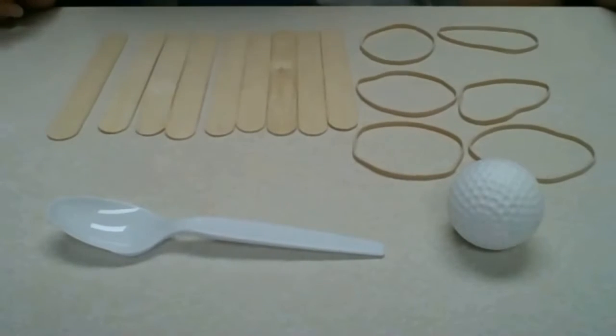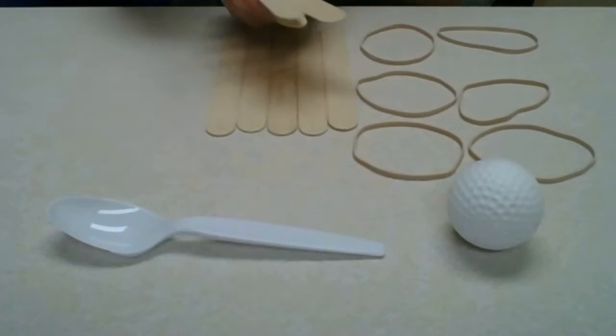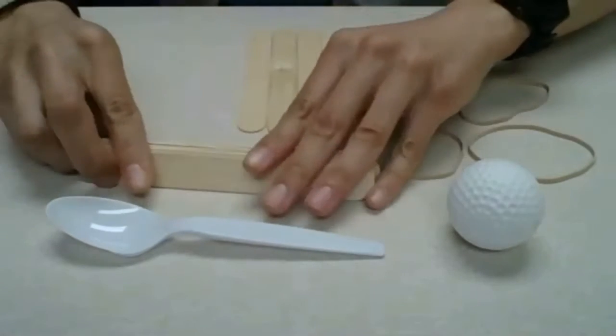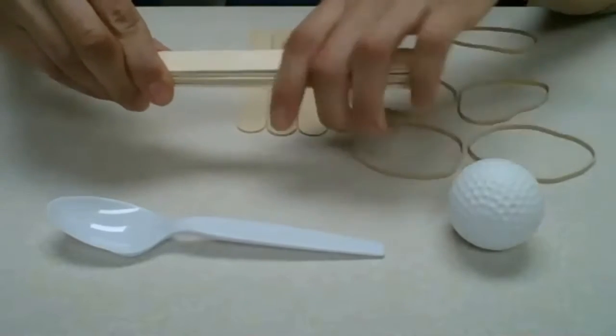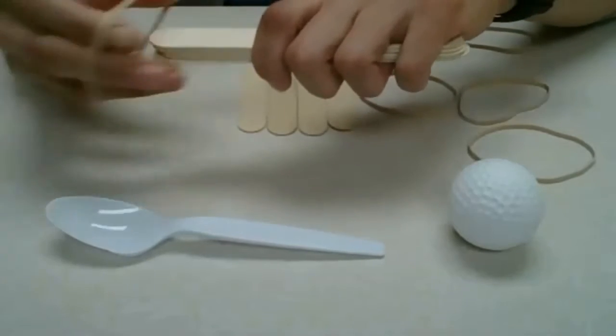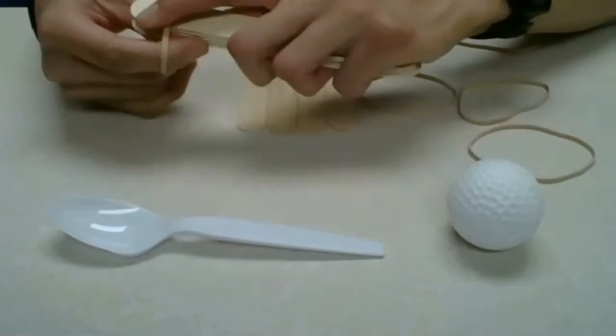Okay, so our first step, what we're going to do, we're going to grab five popsicle sticks and we're going to stack them together. And we're going to need two rubber bands for this part. So we're going to grab one rubber band and loop it around a few times.